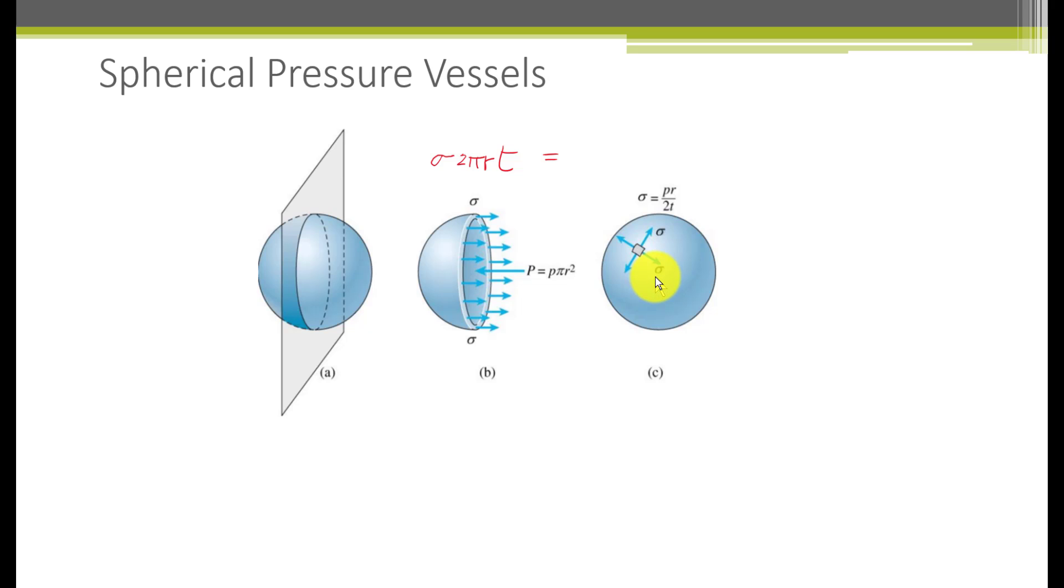Use the same idea to derive the stress formula, but this time we call it a membrane stress instead of a hoop stress because there is no hoop direction. So we balance the forces in the cut plane that pass through the center of the sphere. This is sigma times the circumference, 2 pi r times t, the thickness. That force is balanced against the pressure force, p, which is a pressure, times pi r squared. So we can do the same thing, cancel things, and end up with the membrane stress formula for a sphere. It's sigma equals pr over 2t.